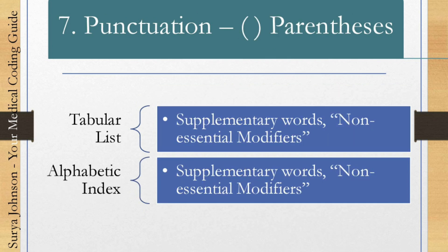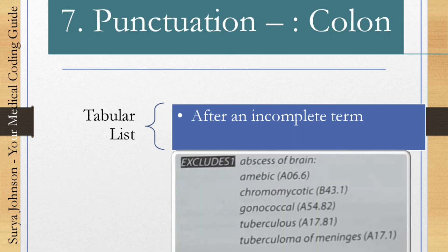Parentheses in the tabular list mean supplementary words — otherwise known as non-essential modifiers. They provide supplementary meaning but do not essentially modify or alter the meaning of the words. In the alphabetic index, parentheses are similarly used for supplementary words and non-essential modifiers. The colon in the tabular list appears after an incomplete term — for example, 'abscess of brain:' is incomplete, then the list continues with amoebic, chromomycotic, gonococcal, to complete the term.